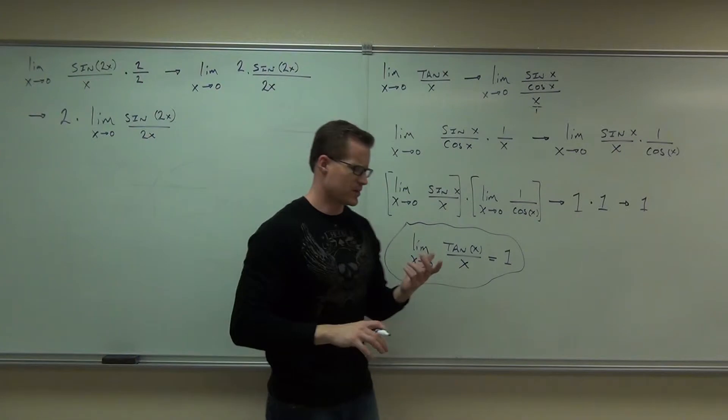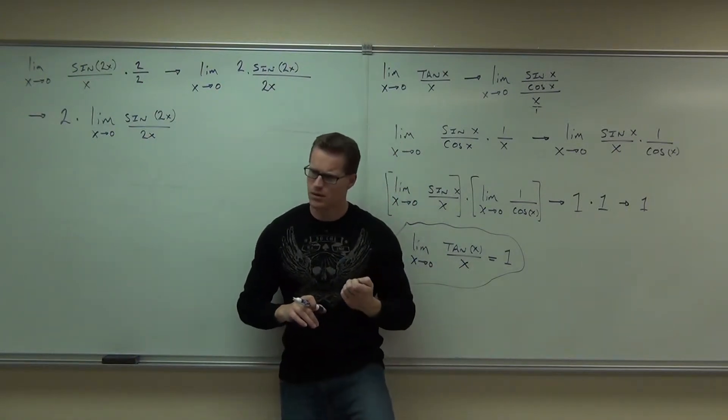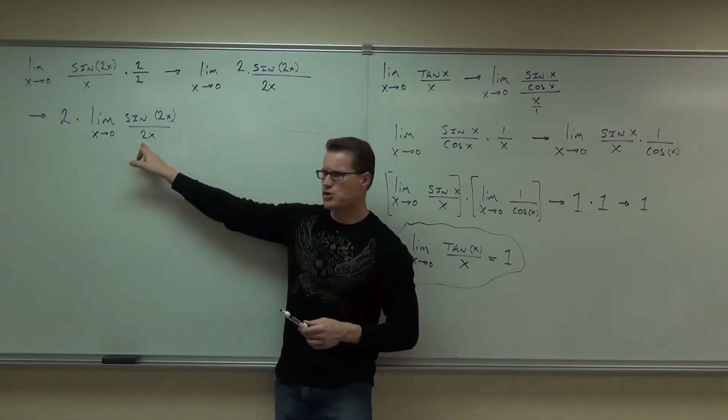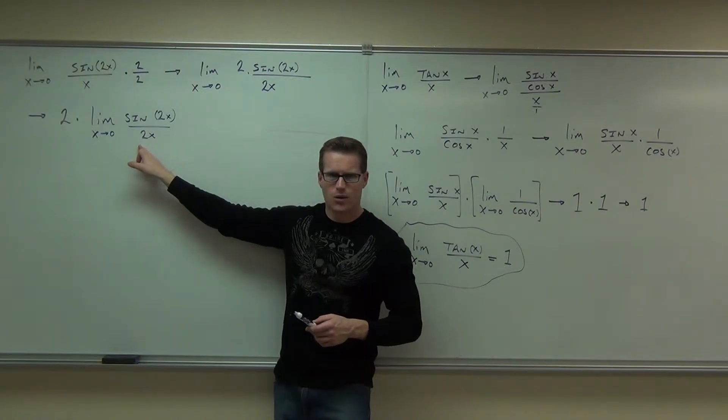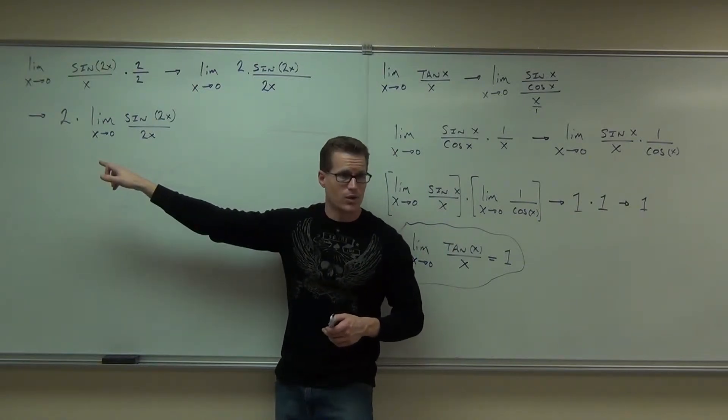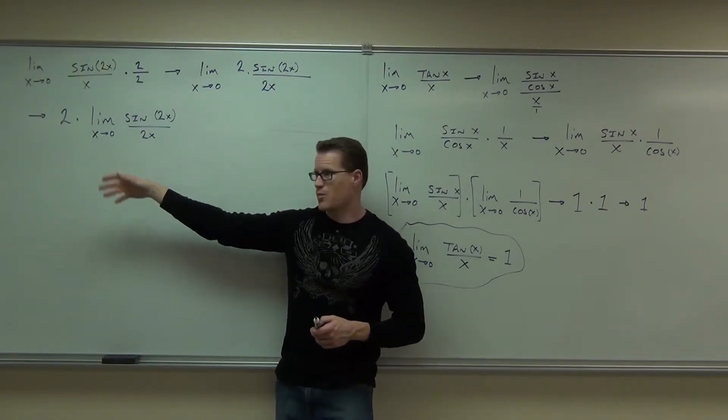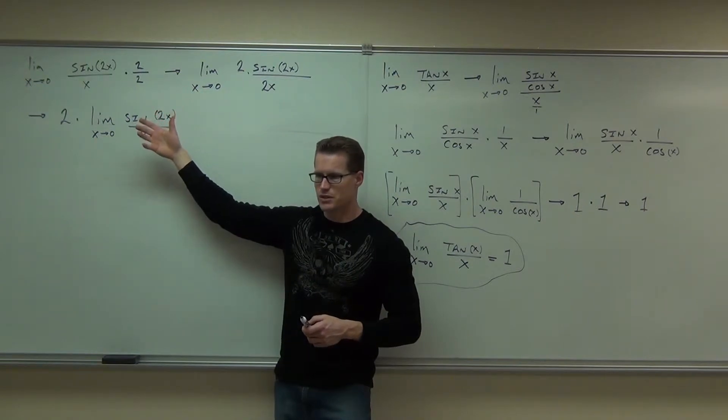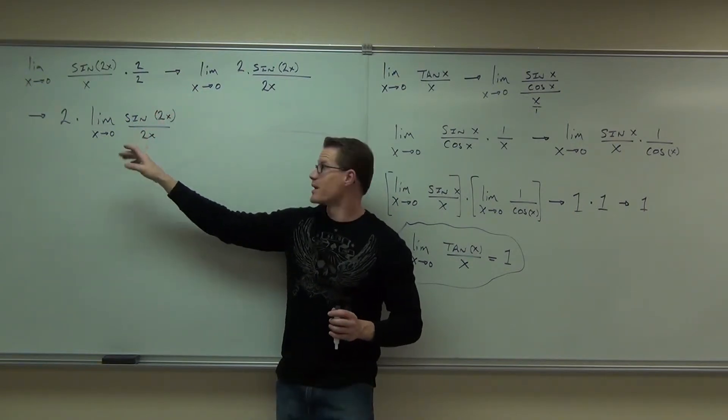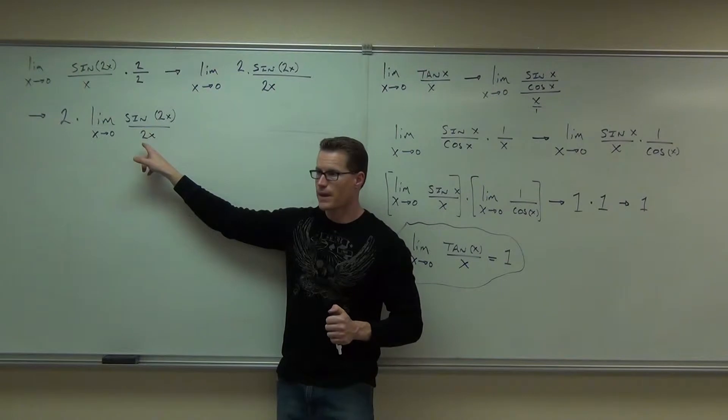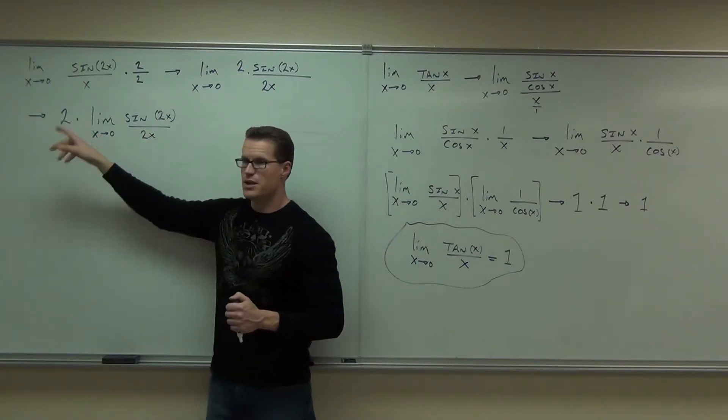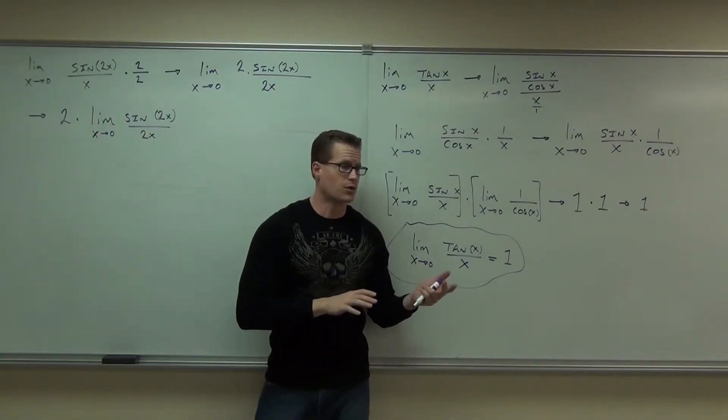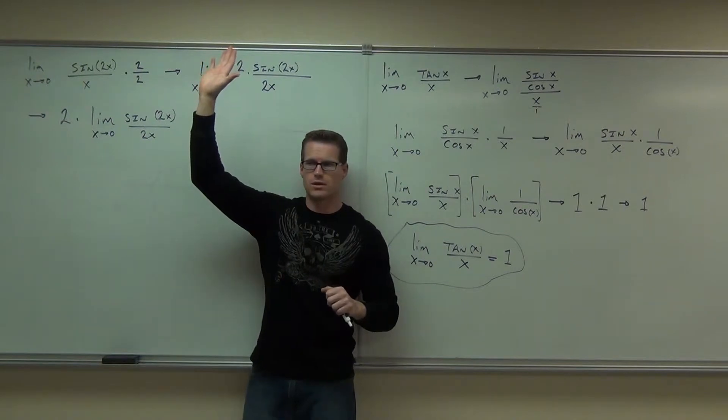Now, some of you might be thinking, well, wait, Mr. Leonard. Why didn't you also pull this 2 out? Why didn't you do that? Well, if I had, what's 2 over 2? Then I'm right back to where I started, right? That would be silly. I'm doing this on purpose so that I can make these 2 things look identical and multiply it by the number that's basically just left over. Raise your hand if you can follow that. Feel okay with it? All right.